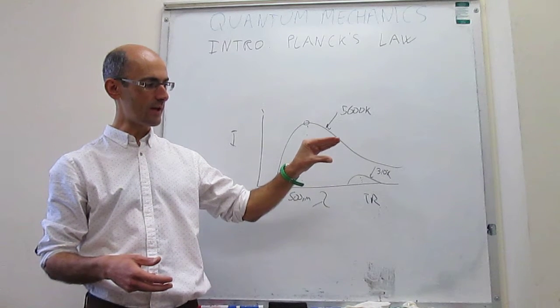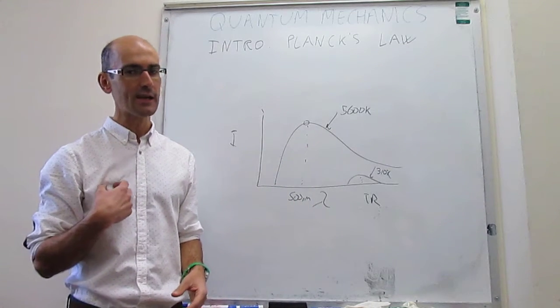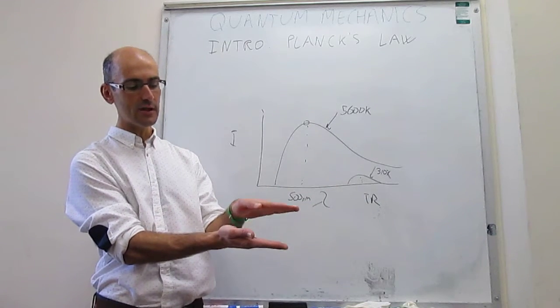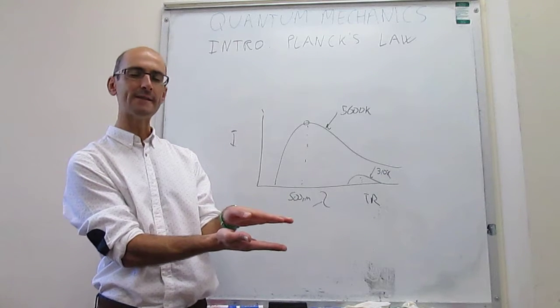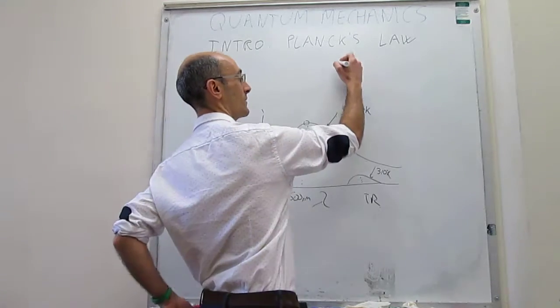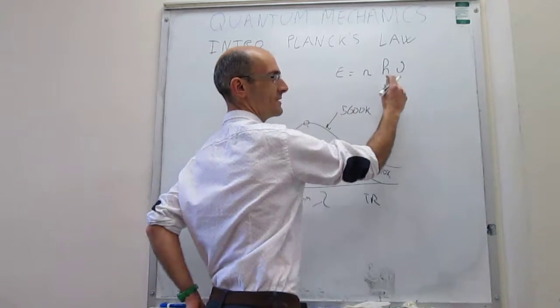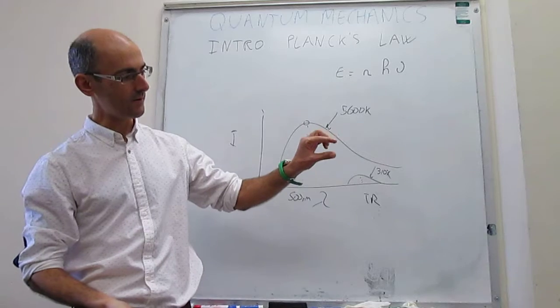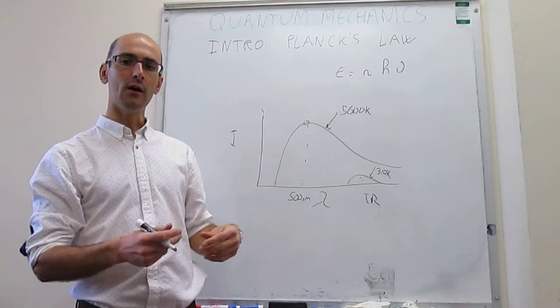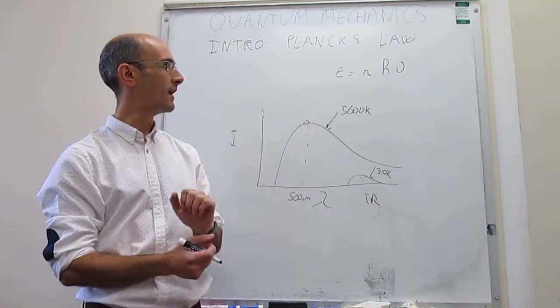But what Planck actually had to do in order to be able to fit these curves is to assume that the energy emitted by that oscillator actually has very well-defined values. And that energy is simply going to be the following. The energy is going to be n multiplied by h and nu, where this is just the frequency of the oscillator. That's how many times per second you're doing this, and it's also the frequency of the electromagnetic radiation that you're emitting in order to get rid of that oscillating energy.